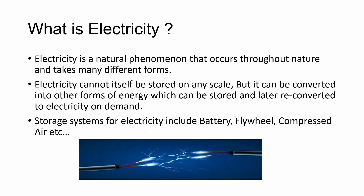Electricity is a natural phenomenon that occurs throughout nature and takes many different forms. Electricity cannot itself be stored on any scale, but it can be converted into other forms of energy which can be stored and later re-converted to electricity on demand. Where can we store electricity? As we all know, we can use a battery — that is one of the storage systems. But in this video, we can first understand what kind of electricity or electric current is possible.